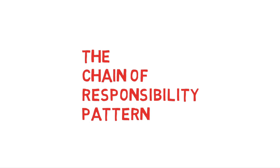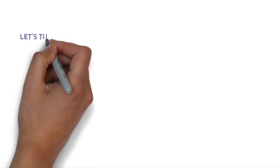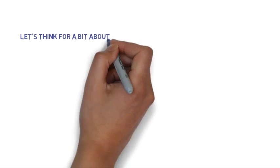An element says 'I know how to process this request, leave it to me.' Take a look at this diagram which shows how the chain of responsibility pattern looks diagrammatically. We have the client at the very beginning sending a request. The client doesn't need to know which processing element will process the request — it only needs to deal with the head of the queue. The processing elements pass the request down until it's finally processed. The sender interacts only with the very first receiver in the queue.